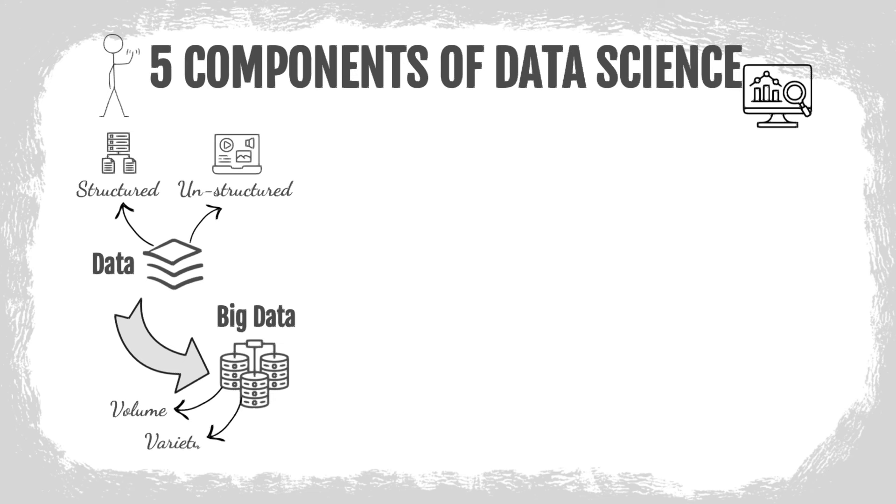Variety - the number of types of data. Velocity - the speed at which data is generated and processed. Value - the usefulness of the data in decision-making. And Variability - changes in the data rates, types, and flows.